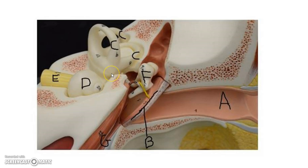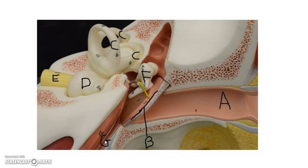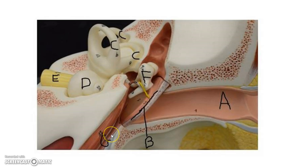Your ear deals with both hearing and balance, so you're responsible for not only the location of these parts but also their functions. One more structure is the Eustachian or auditory tube. It connects with your throat and allows you to equalize the pressure on either side of the tympanic membrane. When you fly and experience a change in pressure, the Eustachian tube equalizes the pressure. When you feel your ear pop, you're equalizing the pressure between the outside and inside of the middle ear.